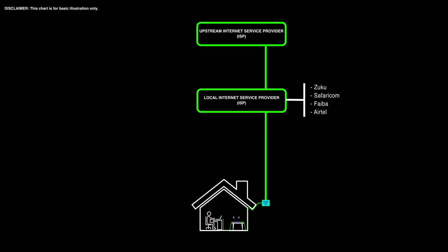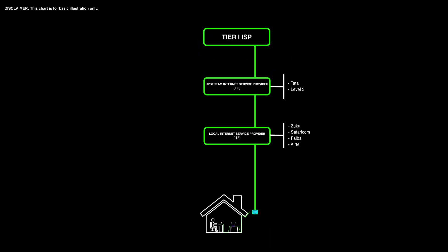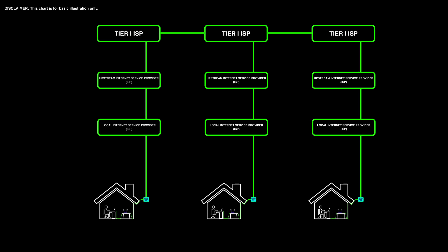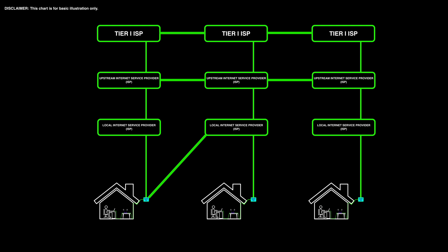Upstream ISPs don't connect directly to residential subscribers like you and me, but they can connect to large businesses that need high bandwidth internet. Some upstream ISPs operating in Kenya include Tata Communications and Level 3 Communications. The basic idea is all ISPs have an upstream provider until you reach Tier 1 ISPs — large international companies that lay and maintain undersea cables. Tier 1 ISPs also connect to each other to keep everything connected, and that is essentially how internet traffic works, allowing you to find anything on the internet.